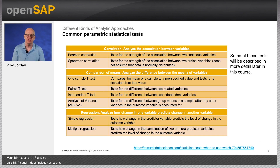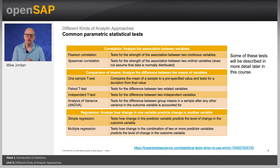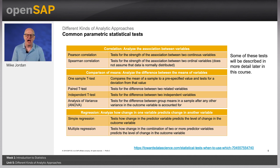A statistical hypothesis is an assumption about a population parameter that may or may not be true. Statisticians use a formal procedure called hypothesis testing to accept or reject these hypotheses. There are a wide range of statistical tests you can use to test a hypothesis. Some common ones include tests for correlation, the comparison of means of variables, and for regression, which analyses how the change in one variable predicts the change in another.